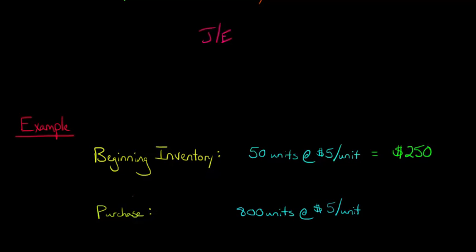And then you decide to make a purchase. You're going to buy some more inventory and it costs the same price as the inventory you already have, $5 a unit. So you're going to purchase 800 units of that inventory. That will be $4,000. We just take the 800 units and multiply it by the $5 a unit.